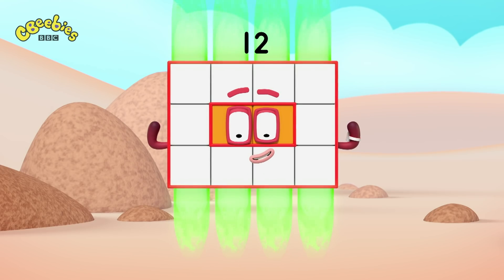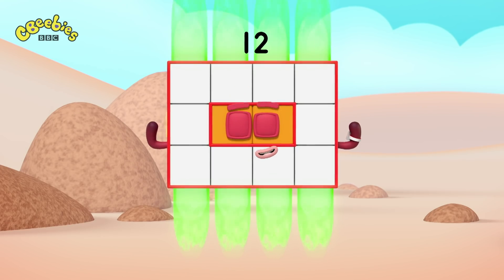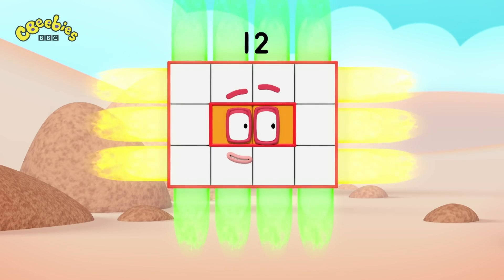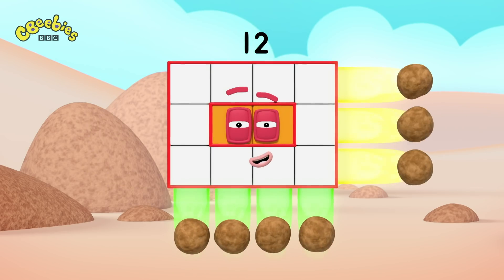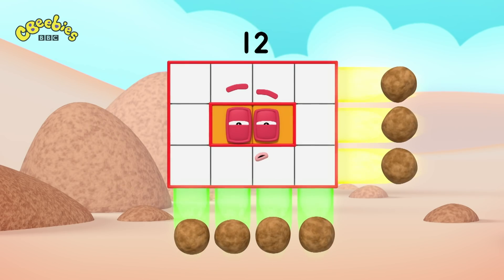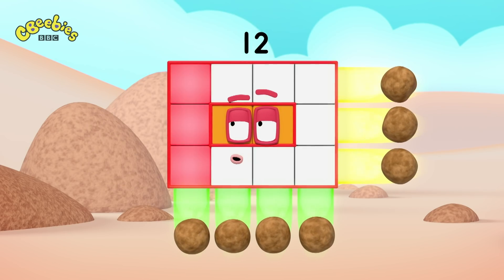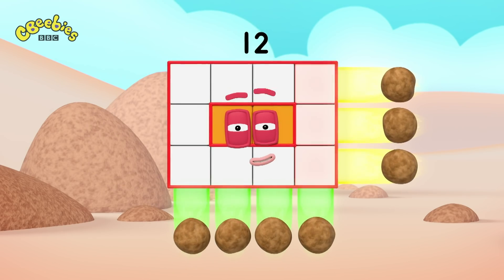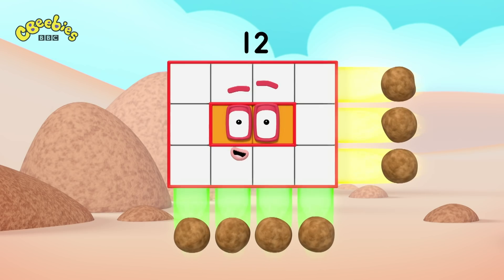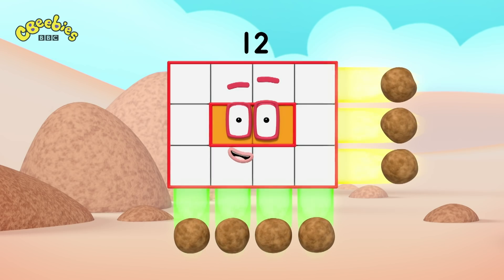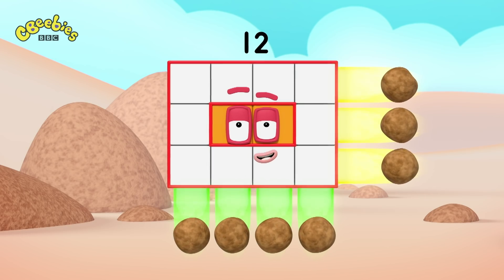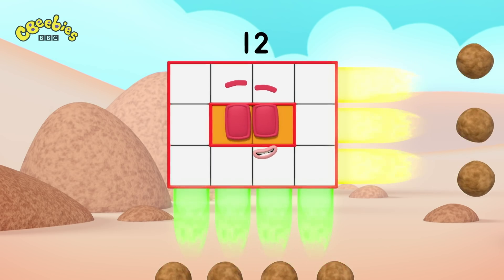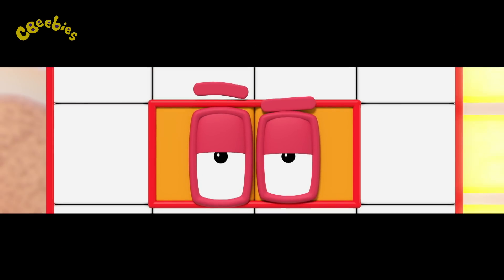Four by three! Four by three's my next array. Four lots of three, you could put it that way. And this rectangular display is about to show you how it's made. Break away!